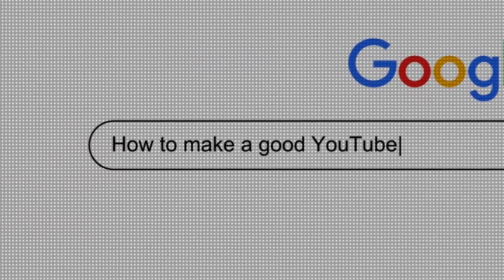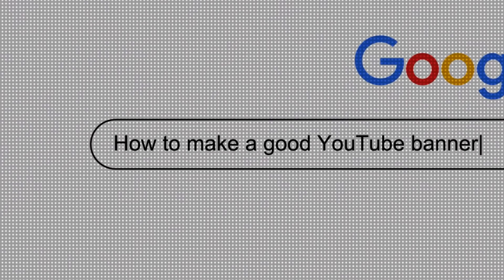So I needed a new YouTube banner for Anchor Thrive, but I didn't feel like opening Figma and messing around with alignment guides for an hour. Instead, I typed a prompt into AI and let it handle all of the layout. In this video, I'll show you how to use Venngage's AI YouTube banner generator to make three clean branded banner variations in less than 10 minutes.